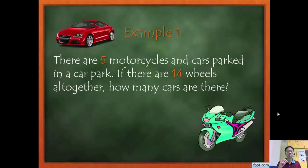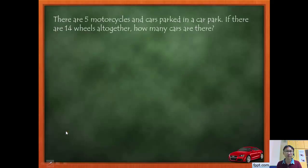Let's look at example one. I've made the numbers very small because I want to illustrate how this method works. There are five motorcycles and cars parked in the car park. If there are 14 wheels altogether, how many cars are there?